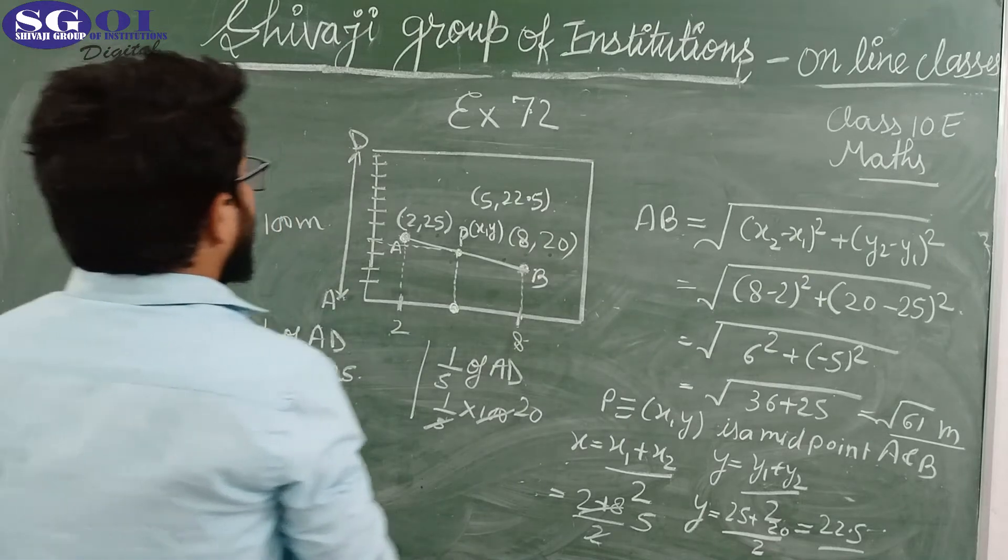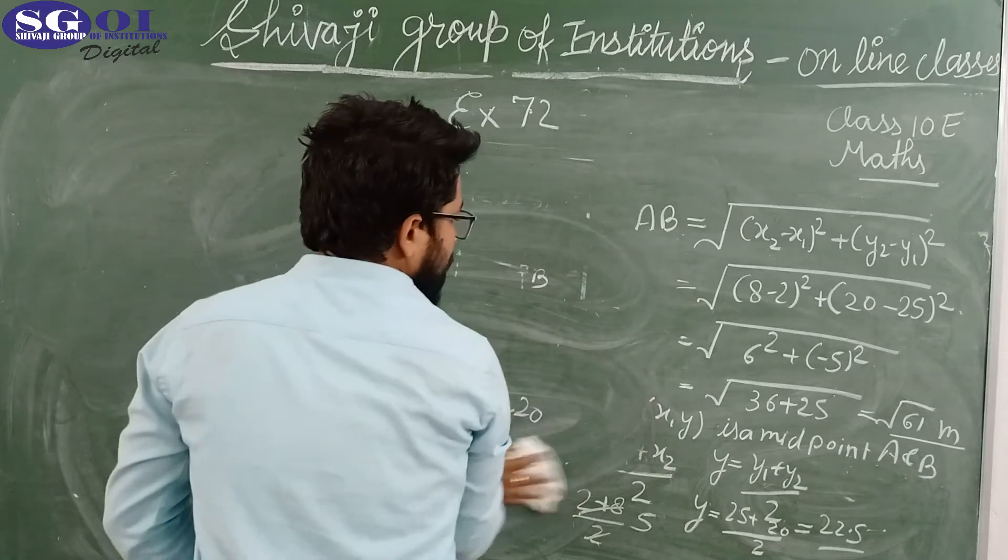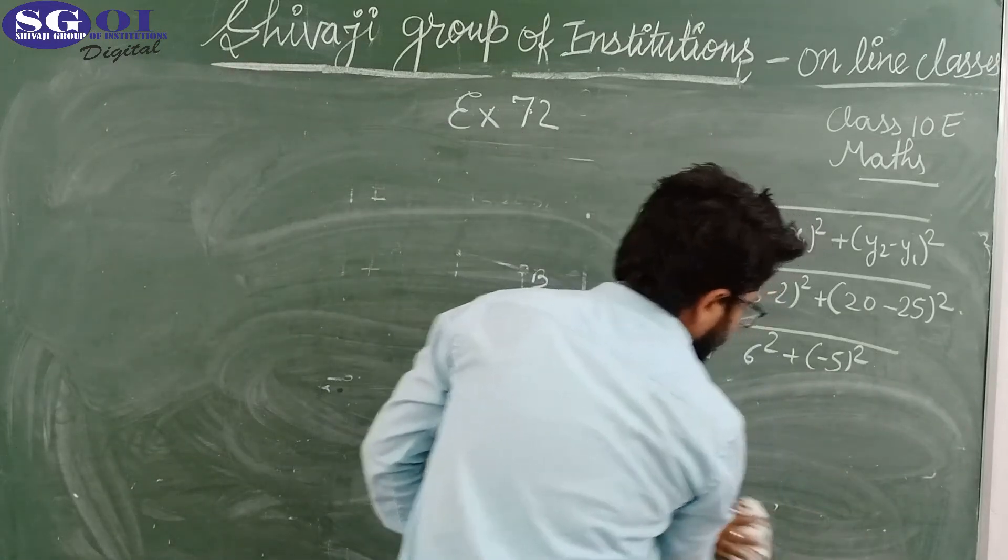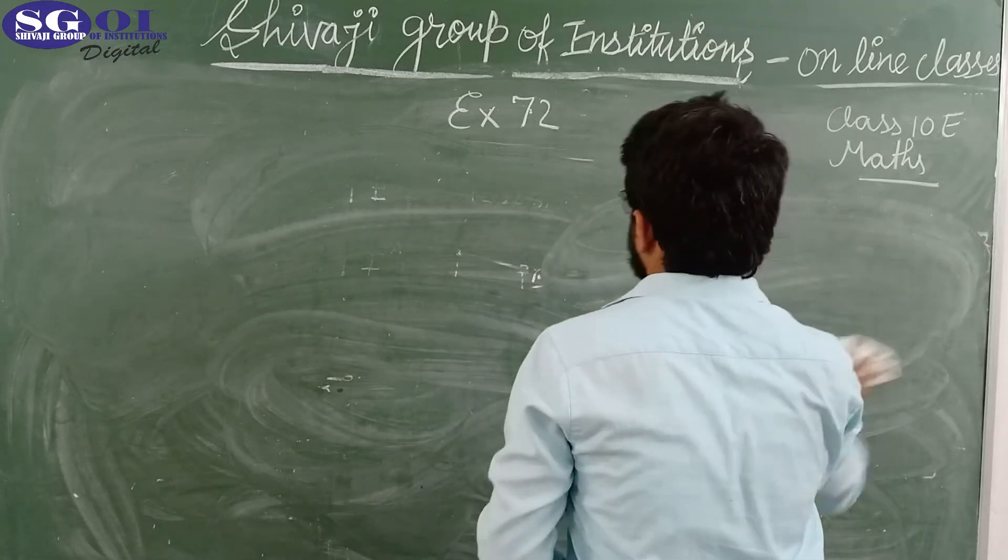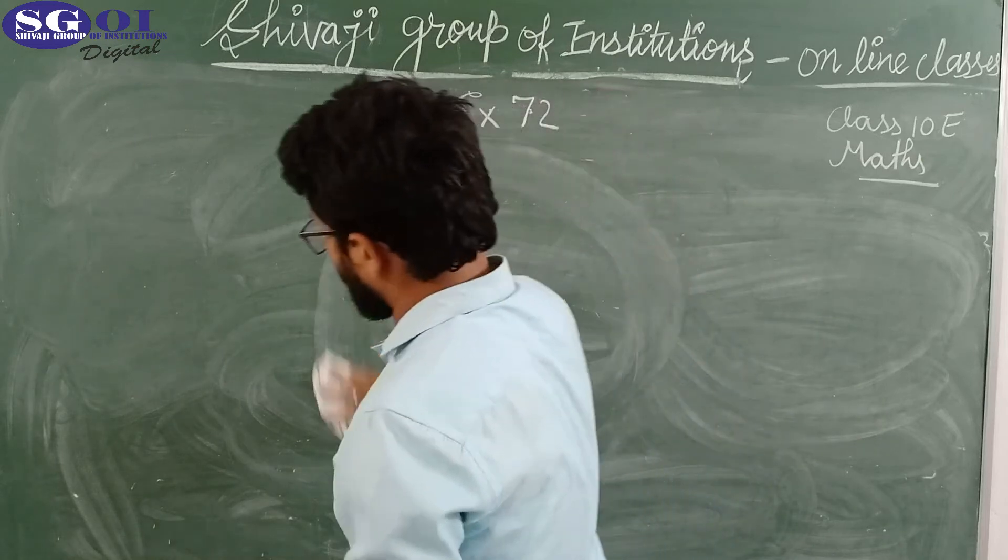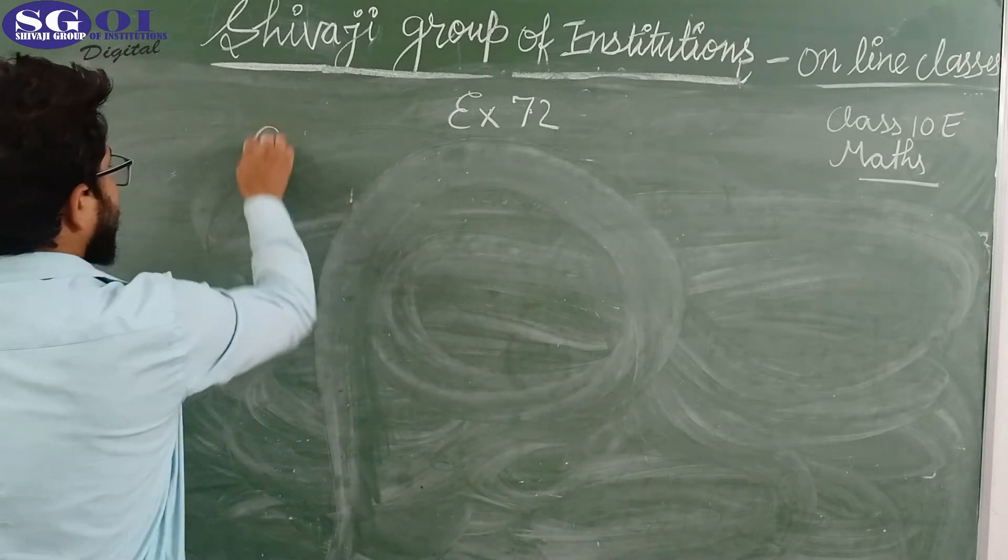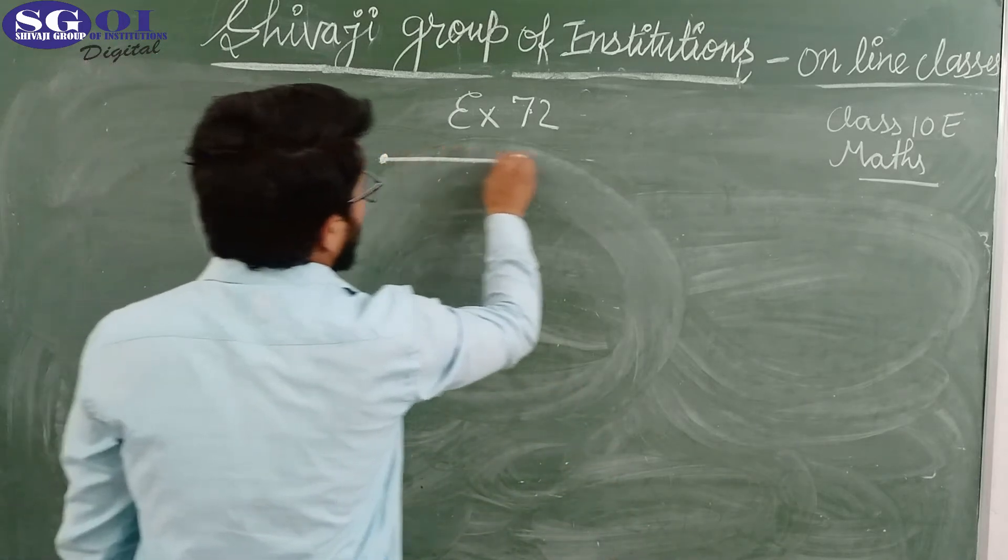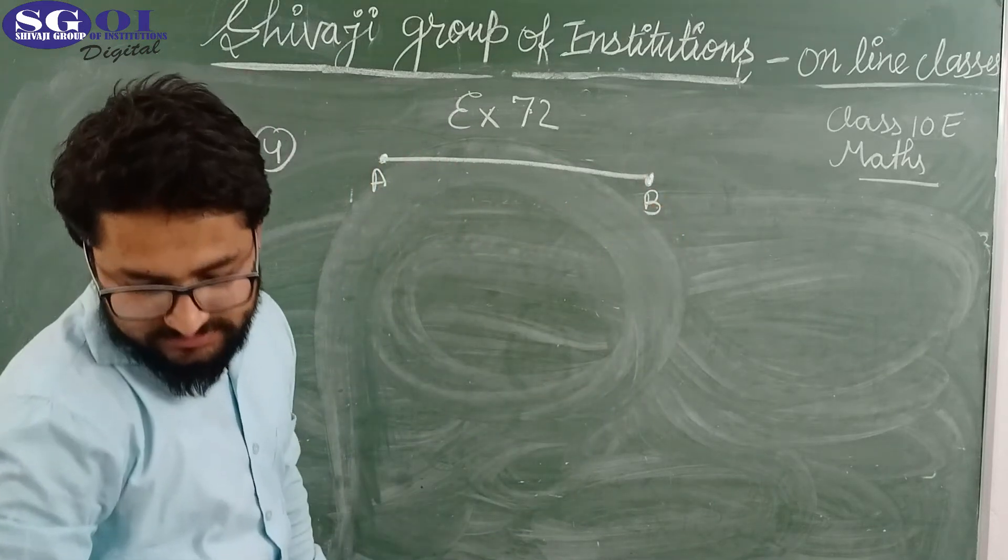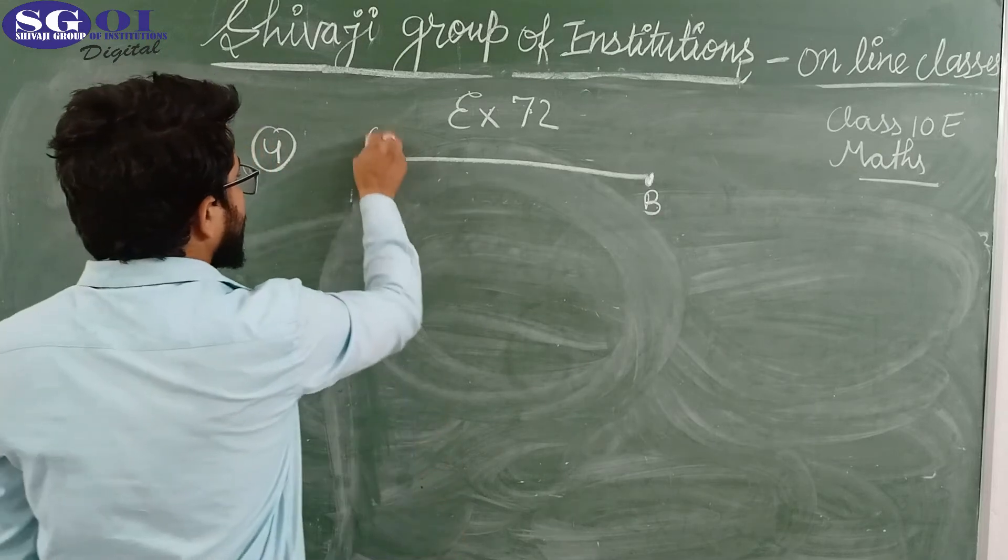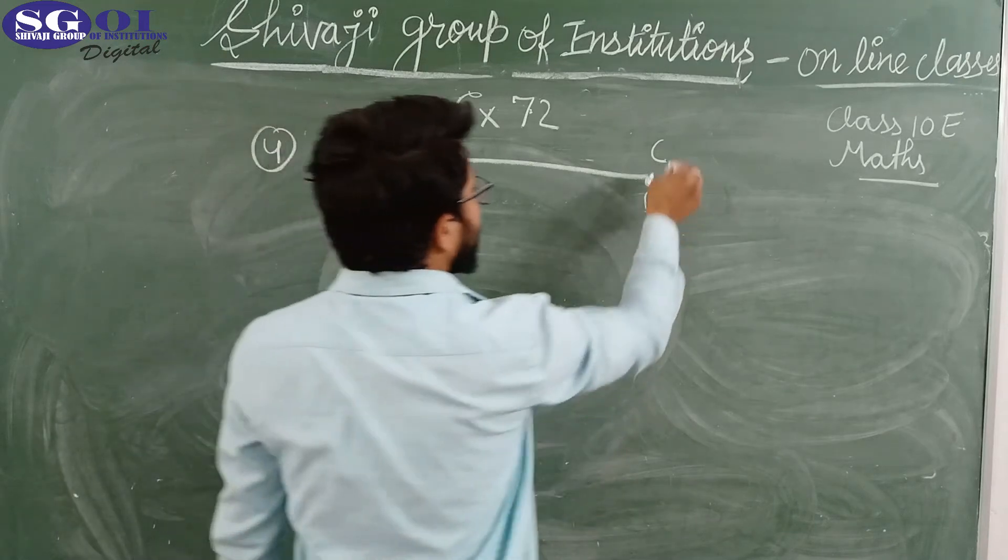Now moving to question number 4. In question number 4, there is a line segment, suppose AB. The coordinates given are (-3, 10) and (6, -8).